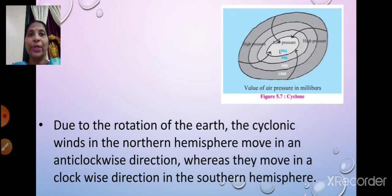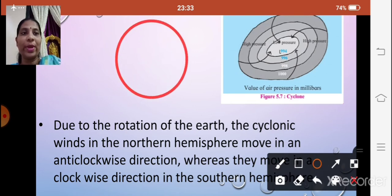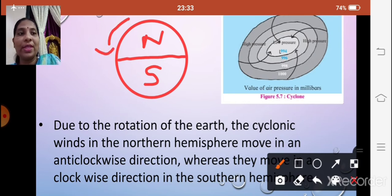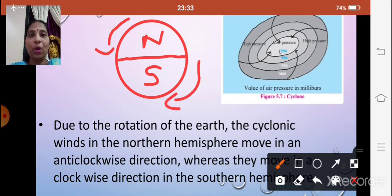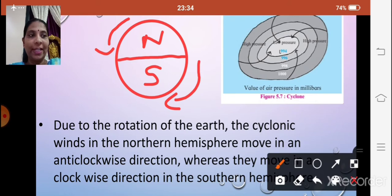Now, because of the rotation of the earth, the cyclonic winds in the northern hemisphere move in an anticlockwise direction, whereas they move in a clockwise direction in the southern hemisphere. Clockwise means like the movement of clock hands — 1, 2, 3, 4, 5. Anticlockwise means the other way around — 12, 11, 10, 9, 8, 7. So because of the earth's rotation, cyclonic winds in the northern hemisphere move anticlockwise and in the southern hemisphere move clockwise.